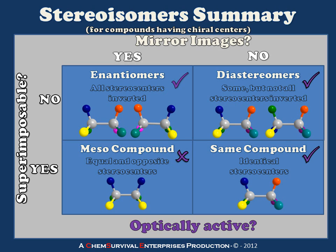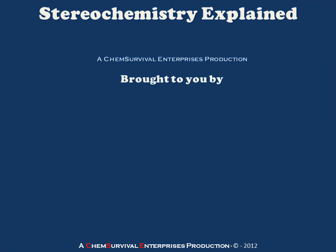So this is a summary of the three major types of stereoisomers, how to identify them, and what some of their characteristics will be. In a future installment, we'll take a look at specific organic compounds which have these properties to give you a better feel for how we work with stereoisomers in organic chemistry. But that's all for now — we'll see you next time. Thank you.